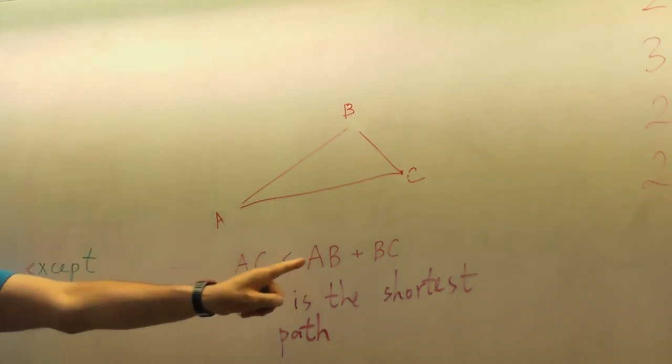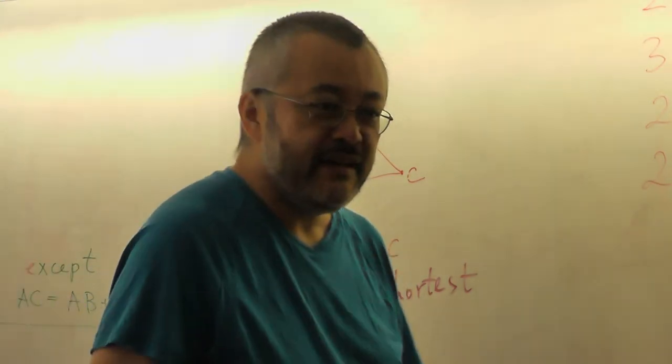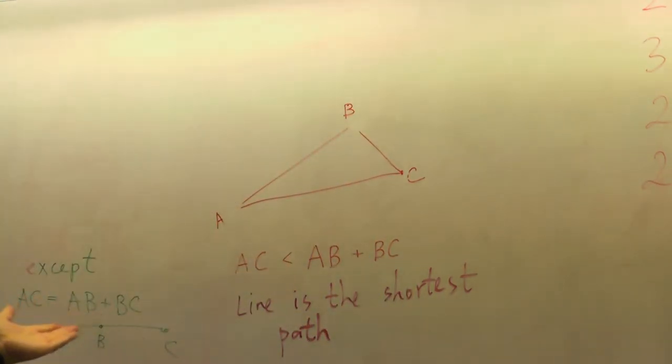So when AC is exactly AB plus BC. When B is between A and C. Yeah, if we have just exactly B on the segment. And then AC equals AB plus BC. Okay, yeah. It's not a Triangle actually.